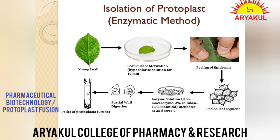It should be kept in mind that the cells should be placed in an isotonic plasmo-liticum such as 13% mannitol or sorbitol. The enzyme solution formula contains 0.5% macerozyme, 2% cellulase, and 13% mannitol. Ye 13% mannitol kyun daala gaya hai? Jab tak cell wall rehti hai woh pressure exert karti hai protoplast pe aur excessive water uptake ko rokti hai. Lekin cell wall hata di to excessive water uptake ke chances ban sakte hain, which may burst the protoplast. Is liye ek isotonic plasmo-liticum daalna padta hai — jo na hypertonic ho na hypotonic.